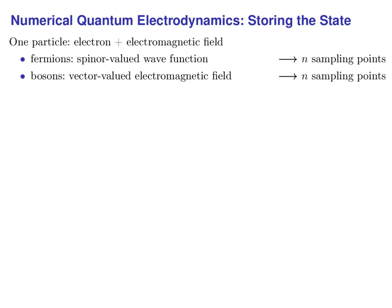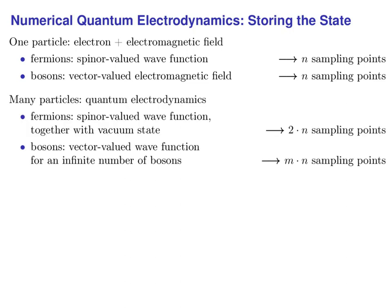In the precursor of quantum electrodynamics — an electron interacting with an electromagnetic field — we have one spinor-valued wave function and a four-vector-valued electromagnetic field. To store this state in a computer, we choose a finite number of sampling points and store, for each of them and for each of the two fields, four complex numbers or equivalently eight real numbers. In quantum electrodynamics, each basis state splits into multiple ones for each number of particles. For fermions this number can be one or zero, which doubles the number of sampling points needed. For bosons this number can be infinite, so we must store wave functions for at least a finite number of them. However, as we will see later, we can get along with just one wave function for the photons in quantum electrodynamics.